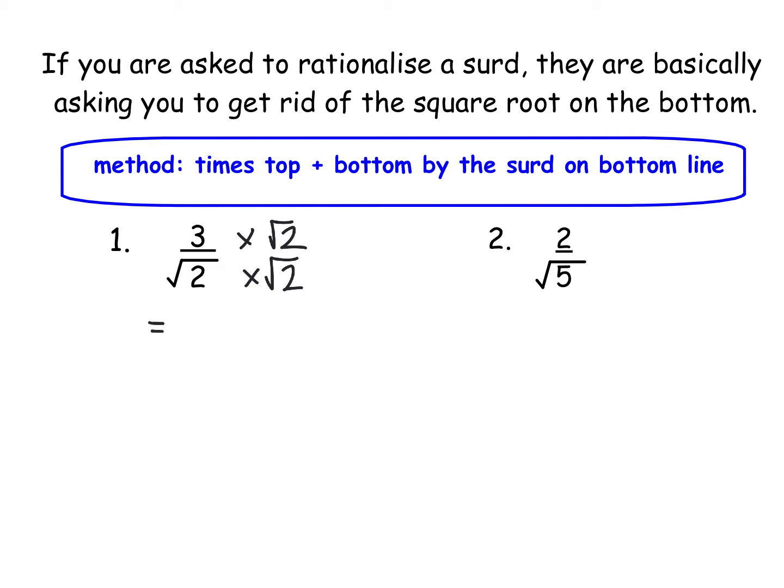So the top line becomes 3 times root 2, so 3 root 2, and the bottom line just for sake of showing you the first one this way, root 2 times root 2 becomes root 4 but we know the square root of 4 is just 2, so we have 3 root 2 all over 2.